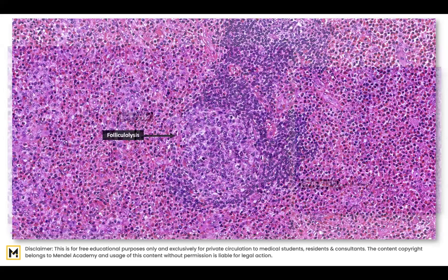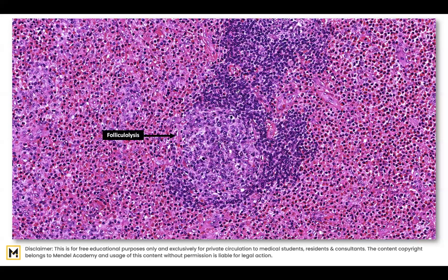This is another picture where it is even more clear. You can see the mantle zone — the dark lymphocytes — and the germinal center, the pale area. There is a breach in the mantle zone: the follicle has been lysed and is being invaded by the pink-colored eosinophils. The whole paracortex is full of eosinophils and they are entering into the follicle. This is an important feature.